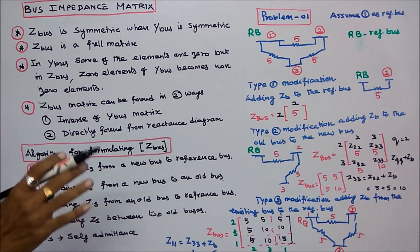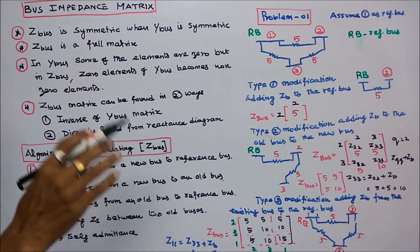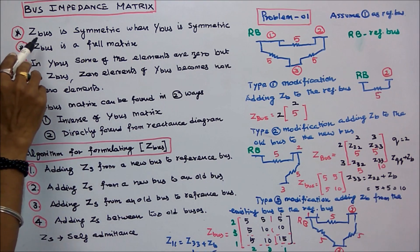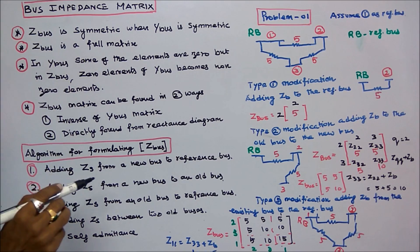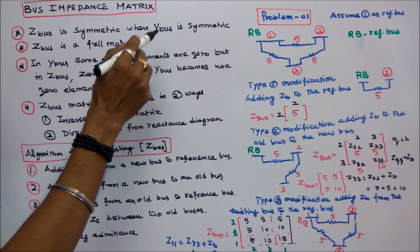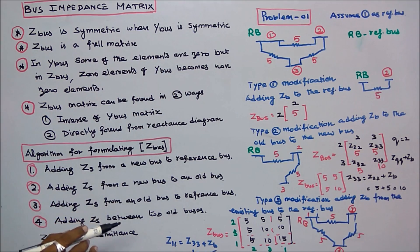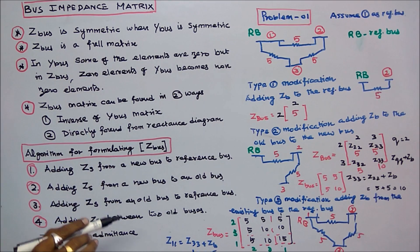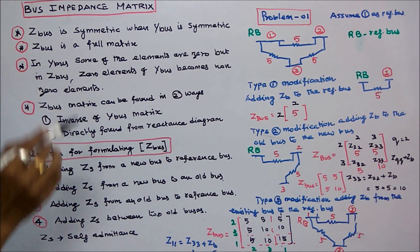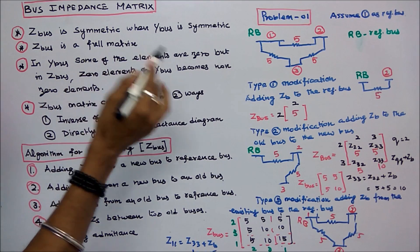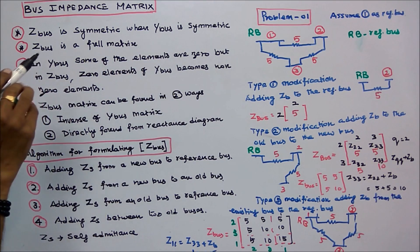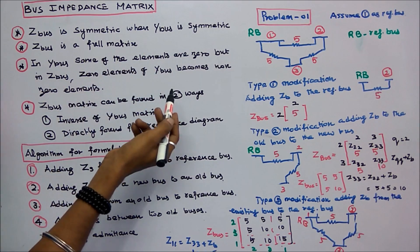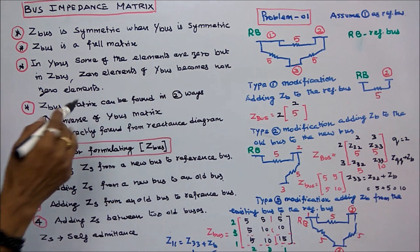This class will discuss the properties of bus impedance matrix ZBus. Bus impedance matrix is symmetric when bus admittance matrix is symmetric. Bus impedance matrix is a full matrix. In the admittance matrix some elements are zero, but in the impedance matrix those zero elements become non-zero elements.